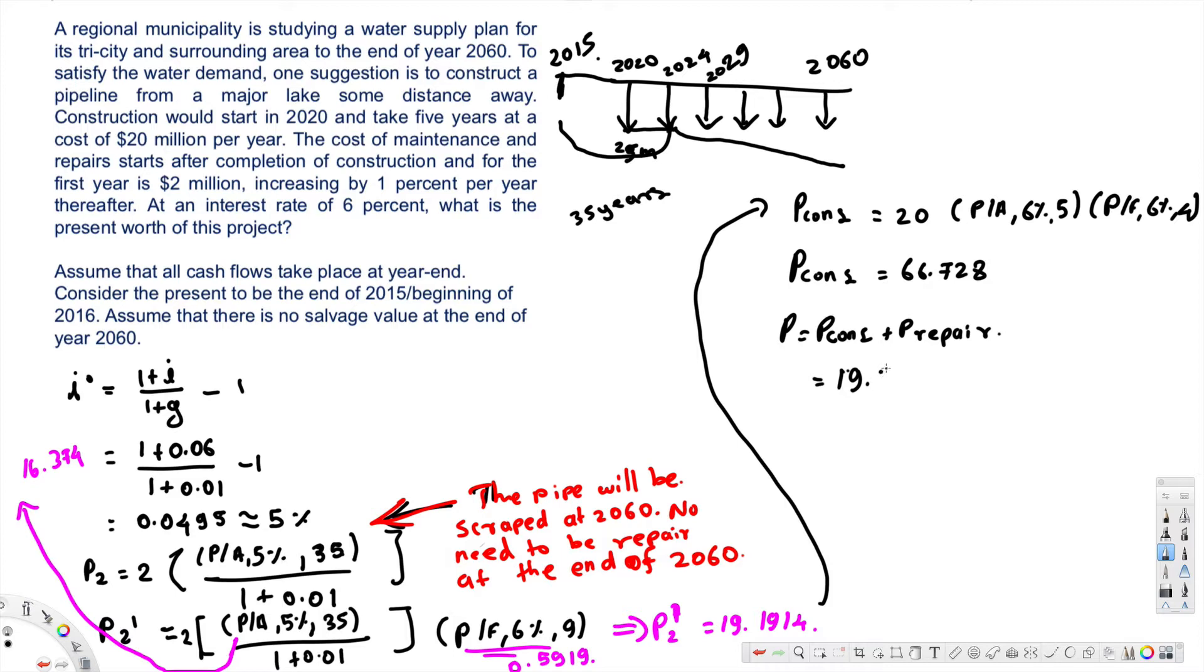Construction would start five years, $20 million. The cost of maintenance and repair starts after completion of first year. This one is repair, that is 19.1914, and construction is 66.728, and that is 85.9193, and that is approximately $86 million.